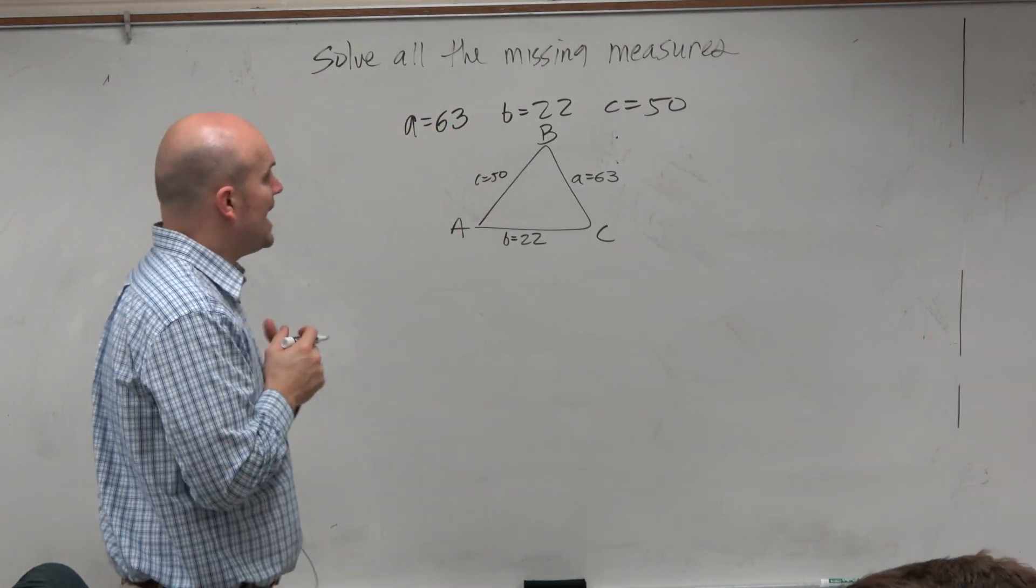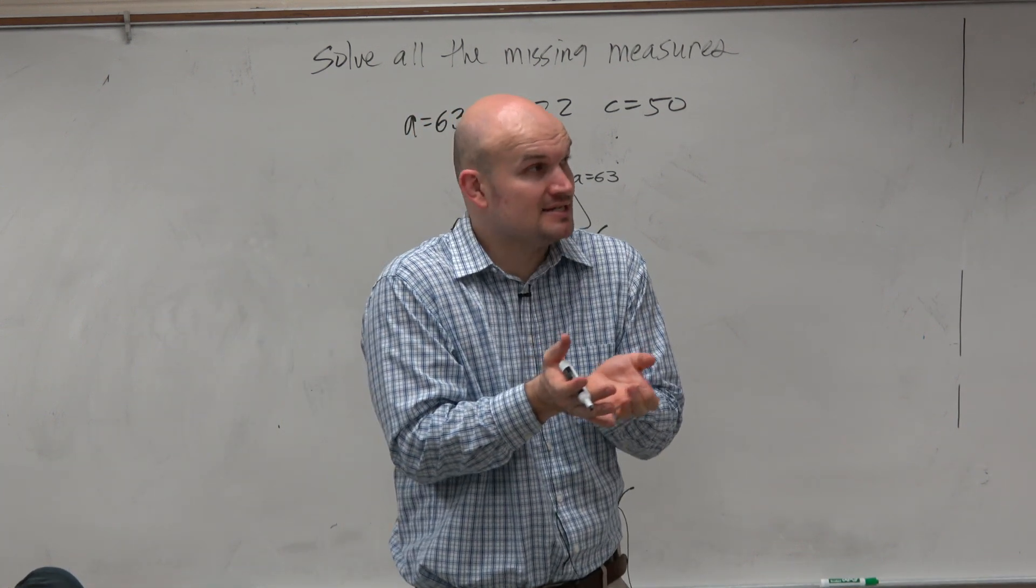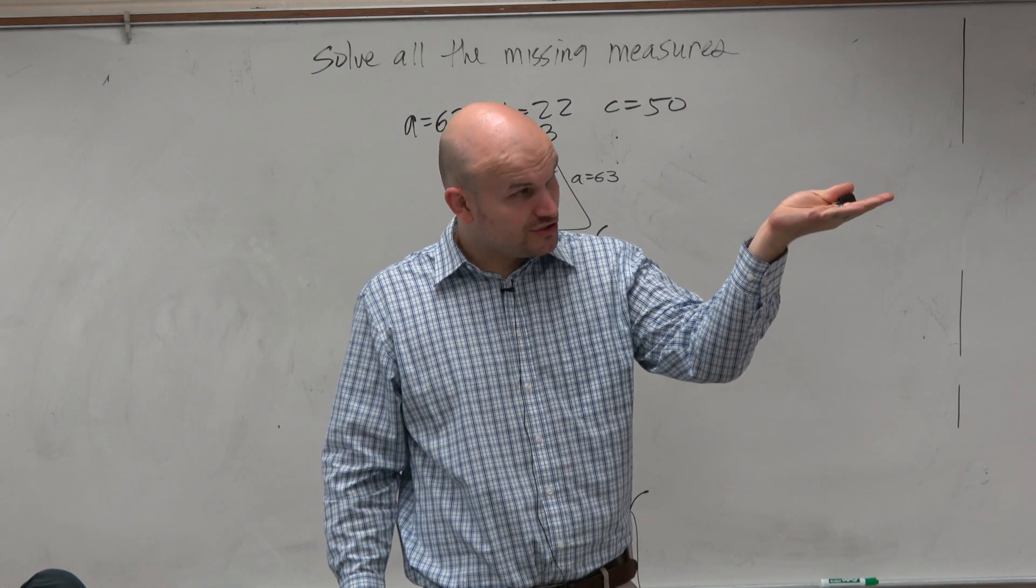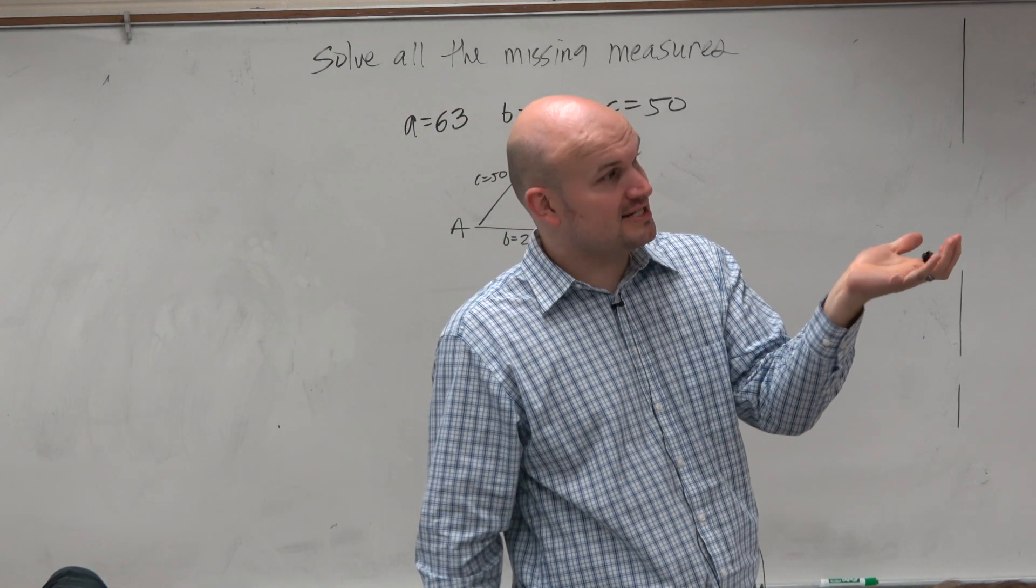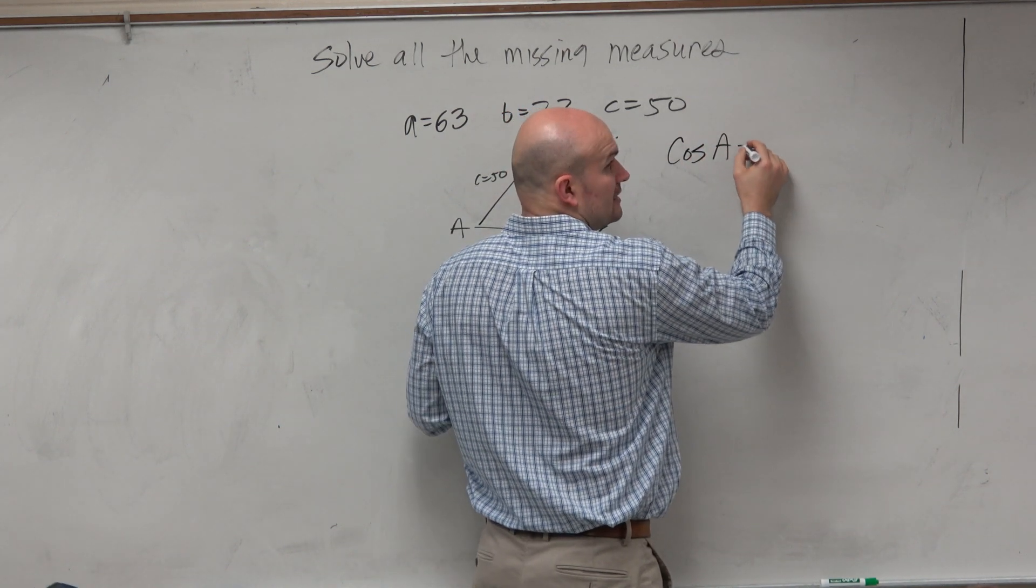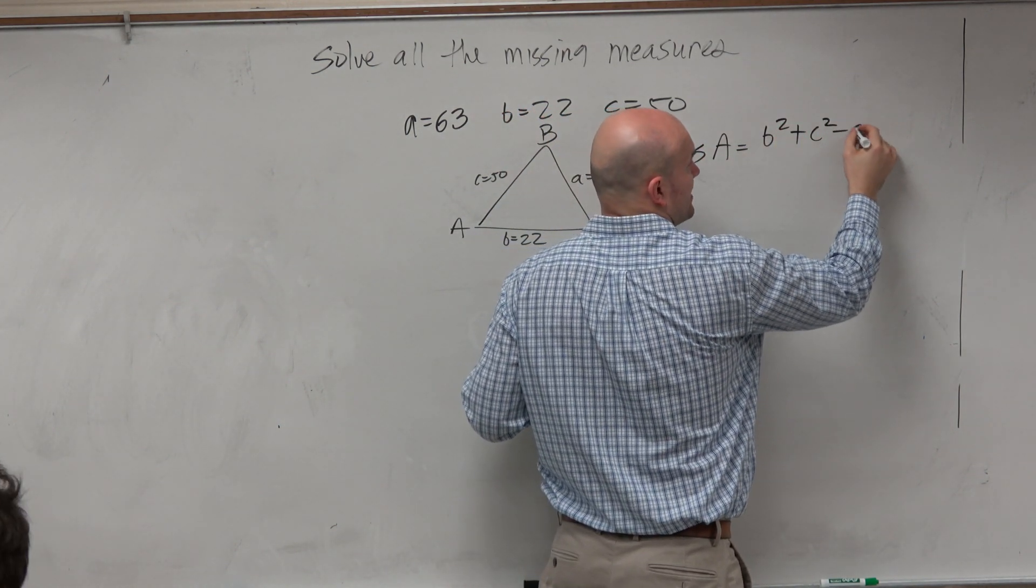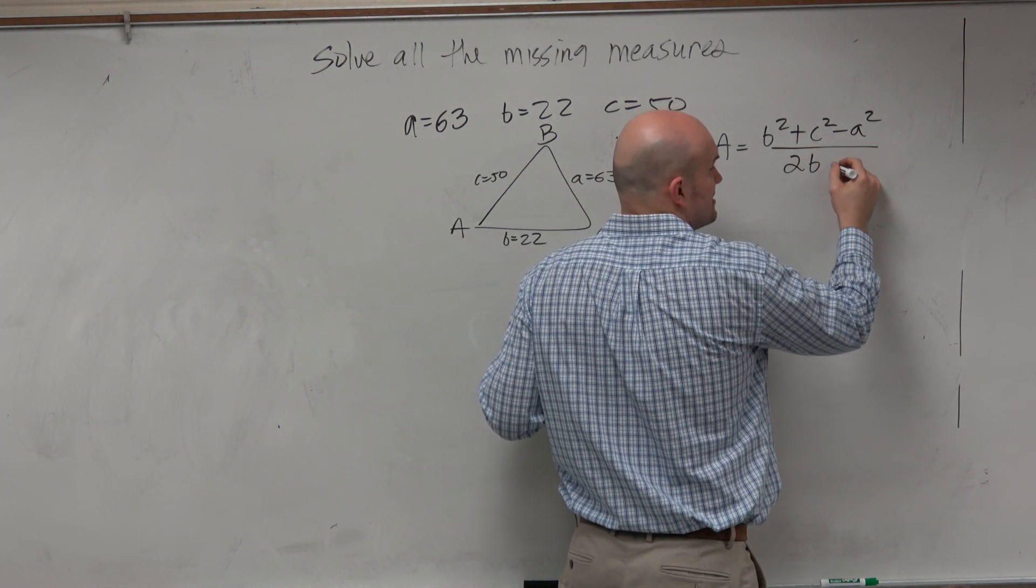Now we look at this and we say, well, if we need to find something, we need to find a missing angle. And for the Law of Cosines, there's two formulas that are provided for us. The one where an angle is at least close to being isolated is represented here. So cosine of A equals B squared plus C squared minus A squared all over 2 times B times C.